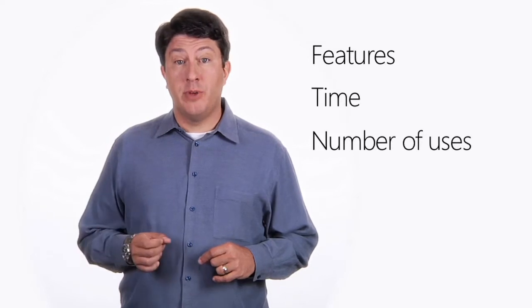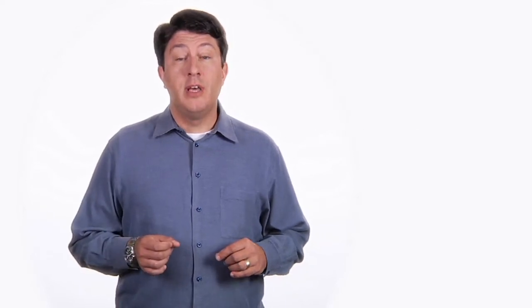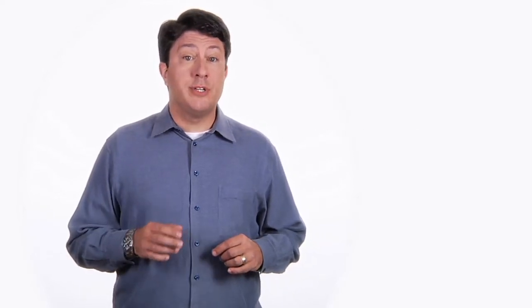It's up to you to decide what the differences are between a trial and paid app. For example, you could limit your trial by features, by time, or even by number of uses. In your code, you just check license information is trial property, and then listen for the license information license changed event.